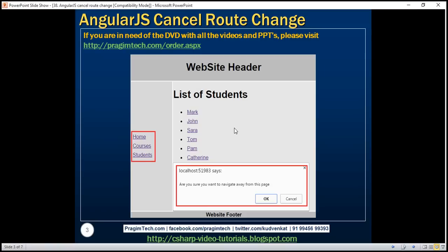This technique is extremely useful when you have a long form that you're filling. For example, you have filled 90% of that form and at that point you have accidentally clicked on one of the navigation links. If that website allows you to navigate to that new route without any sort of confirmation, you will lose your unsaved data. On the other hand, if the website displays a confirmation message, you can click the Cancel button and stay on the same page to retain your unsaved data. So let's see how to implement cancelling route change in an Angular application — let's flip to Visual Studio.